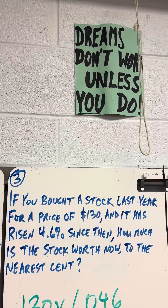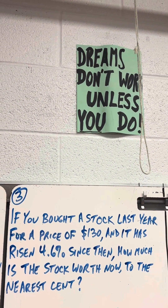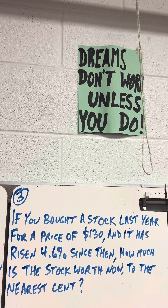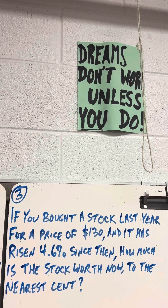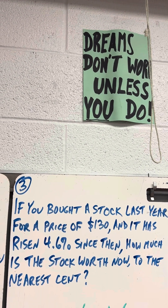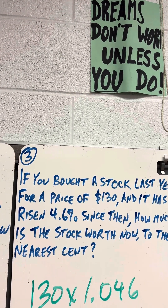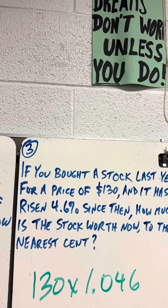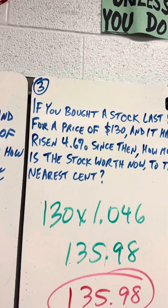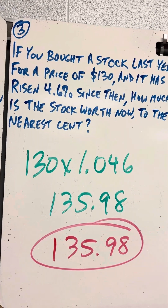If you bought a stock last year for a price of $130 and it has risen 4.6% since then, how much is the stock worth now to the nearest cent? That's going to be $130 times 1.046, which is $135.98.